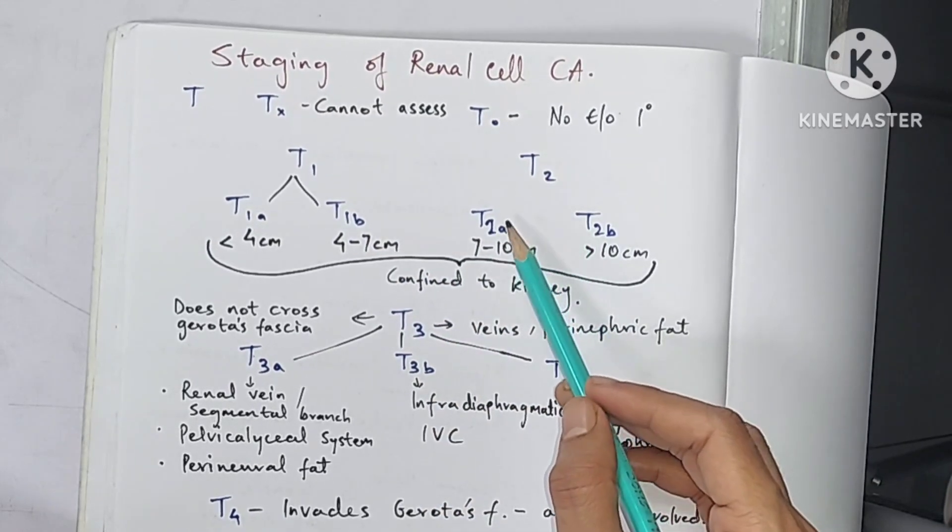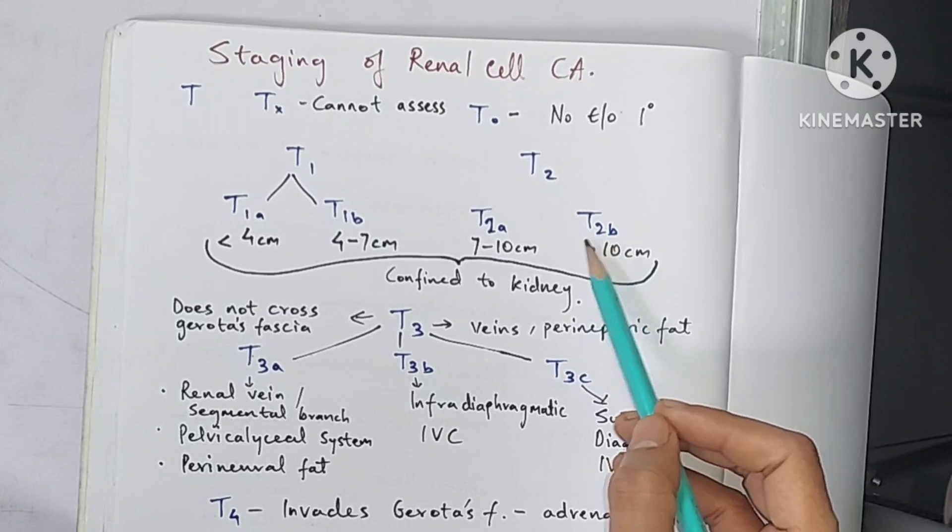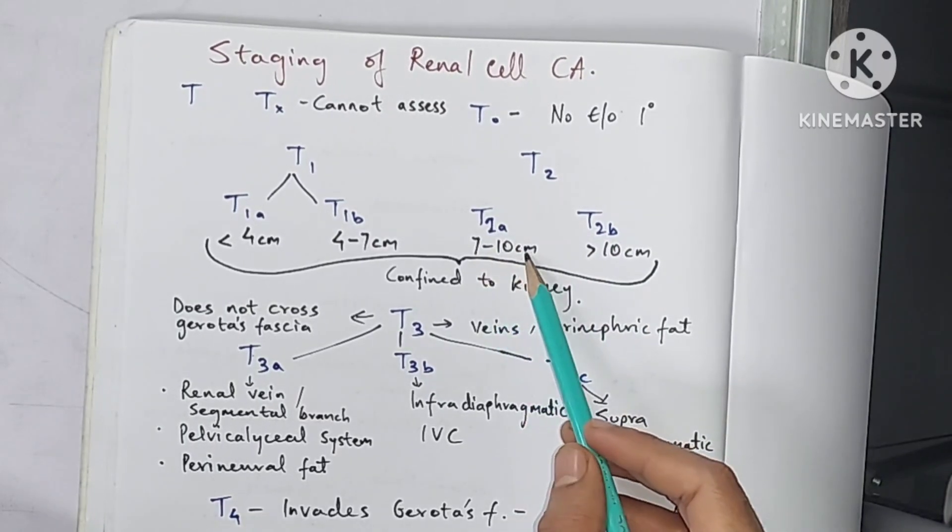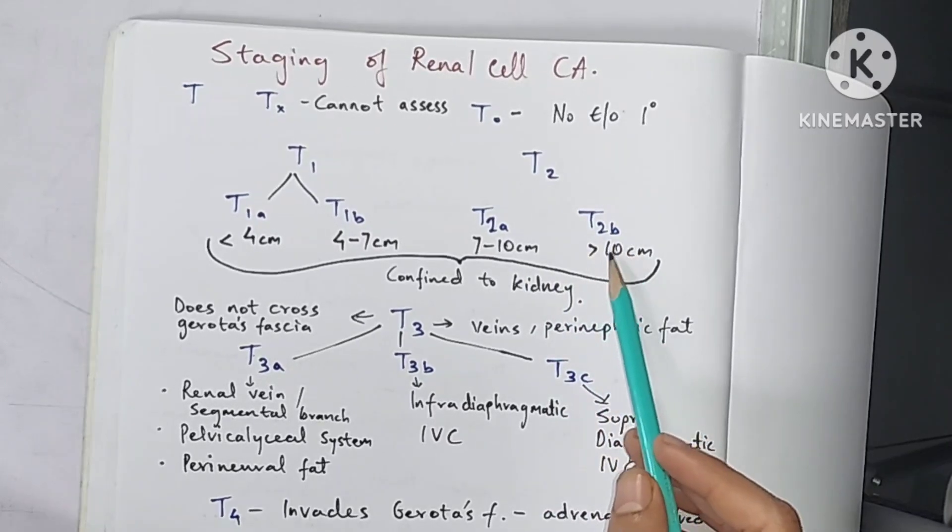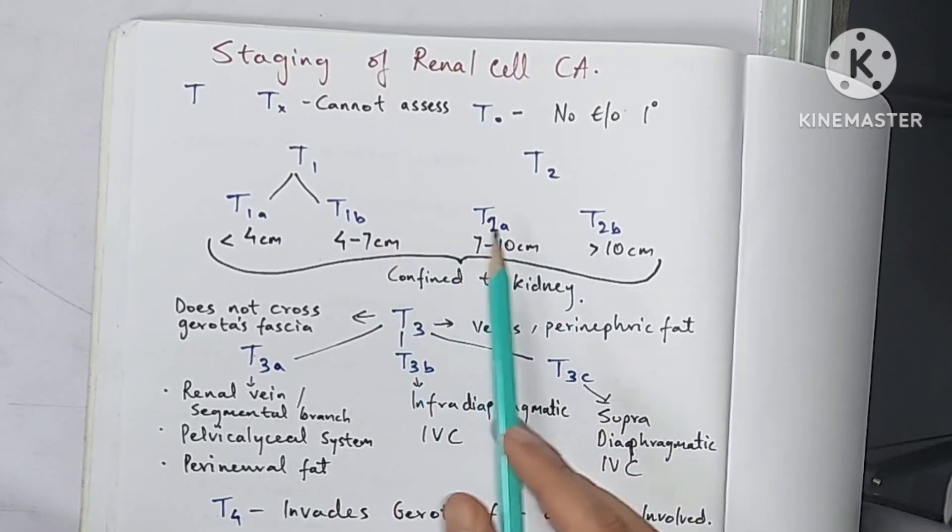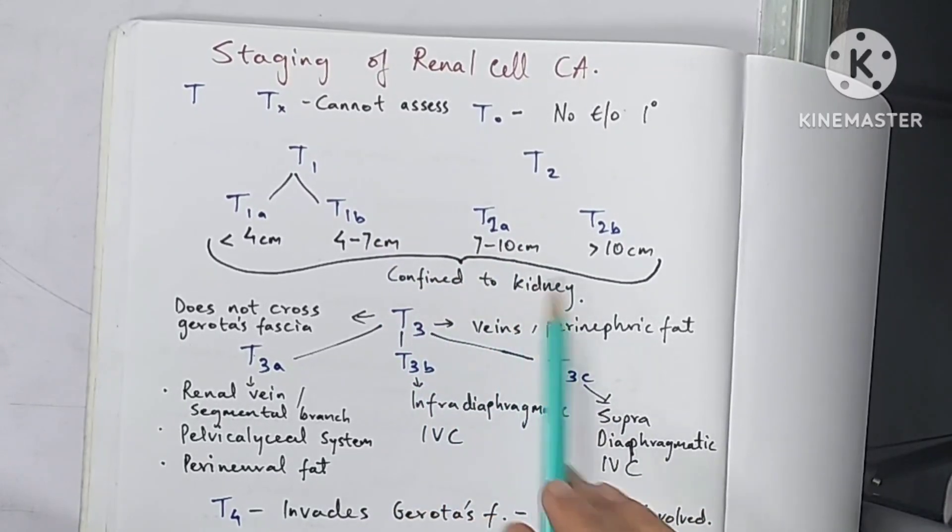T2 that is T2a and T2b. T2a is when it is 7 to 10 centimeter and T2b when it is more than 10 centimeter. T1 and T2 both these are when the tumor is confined to the kidney.